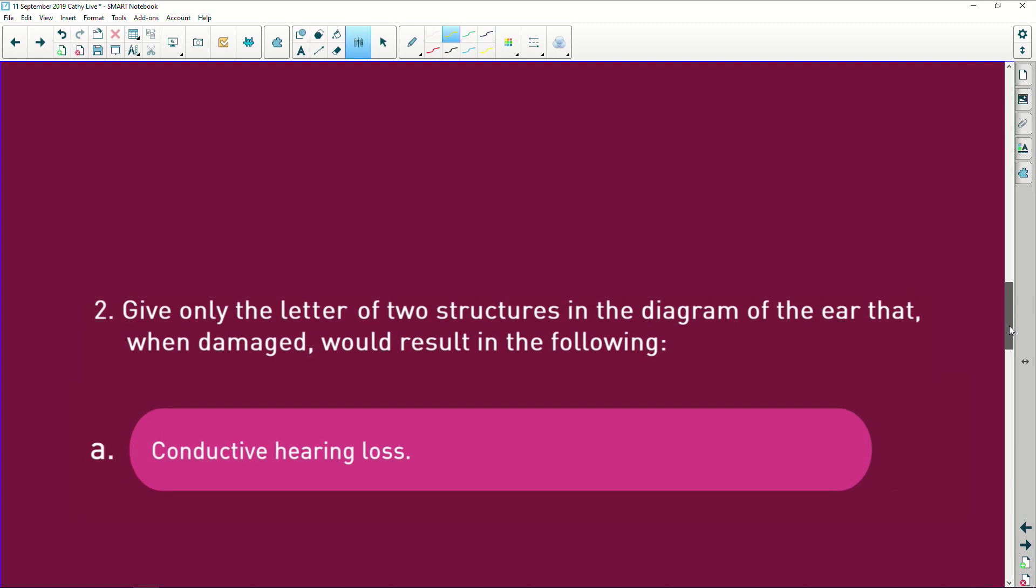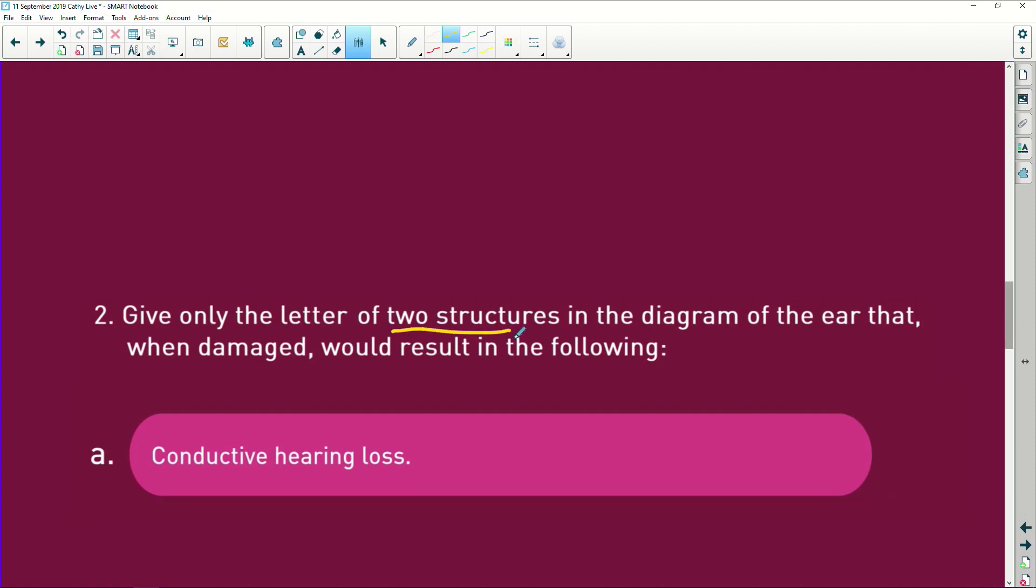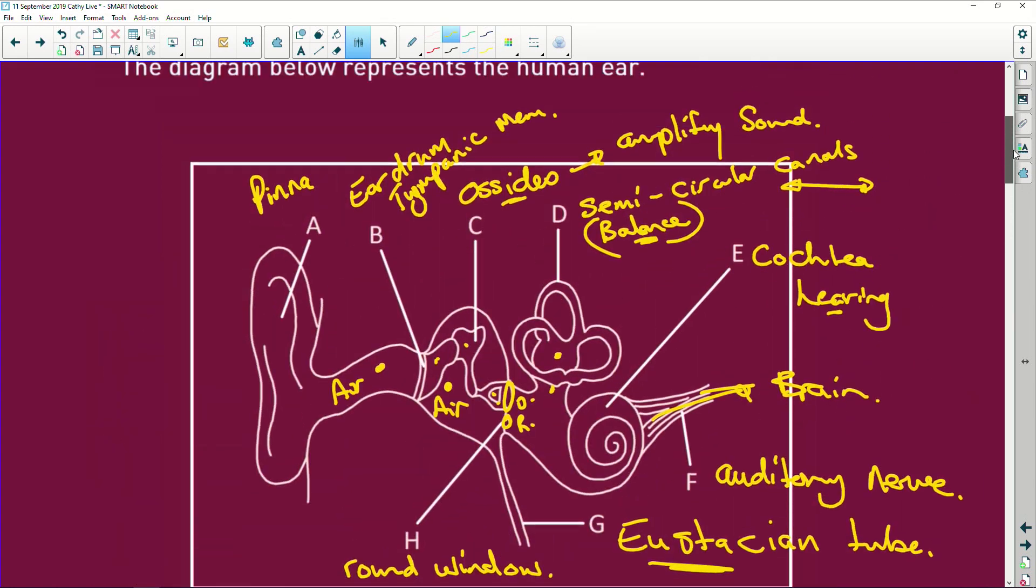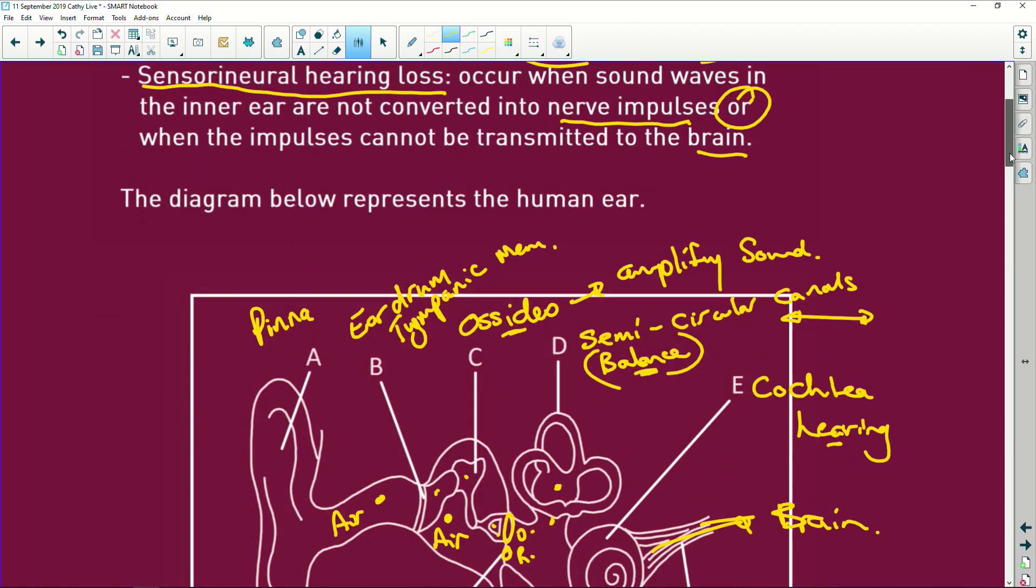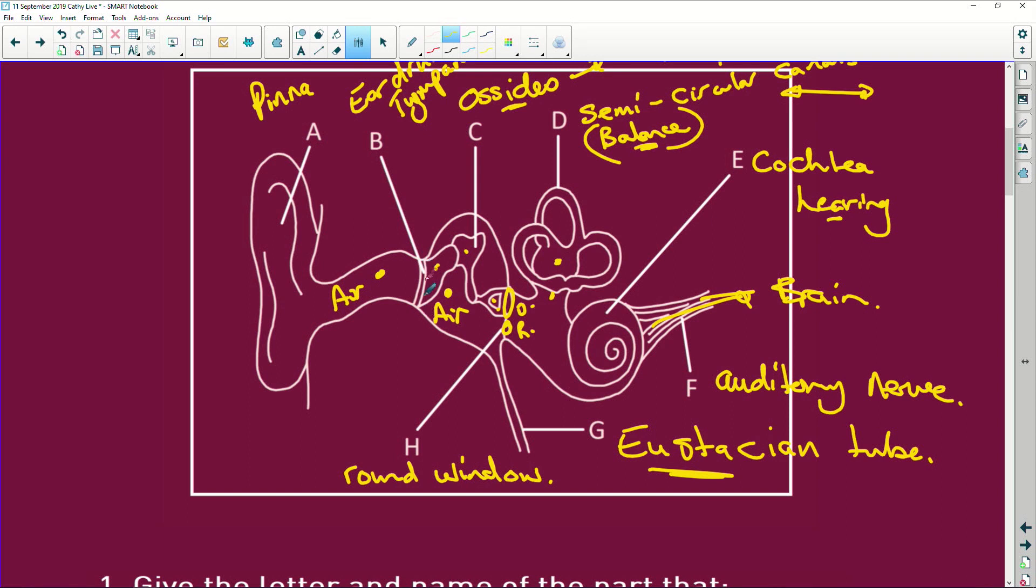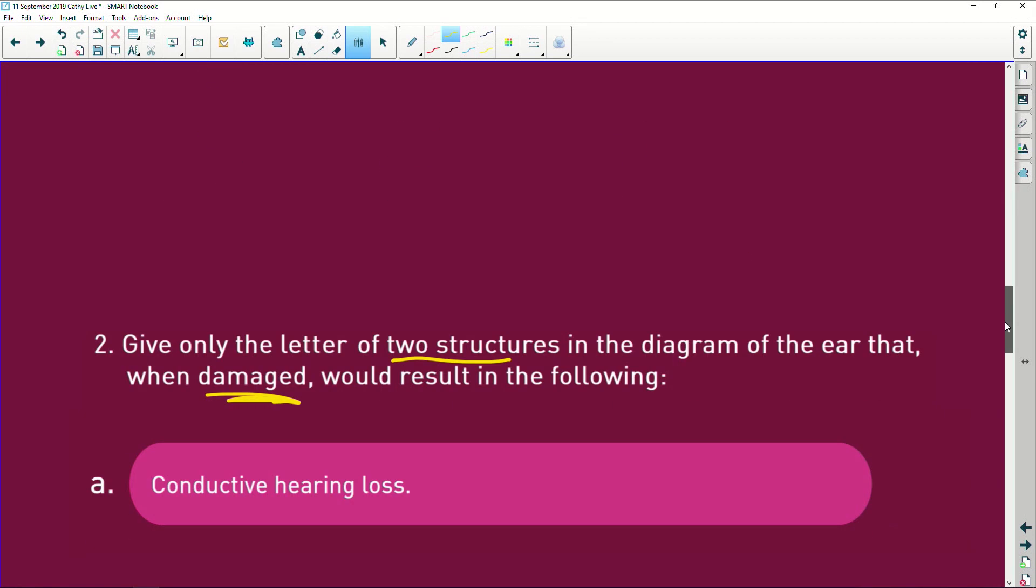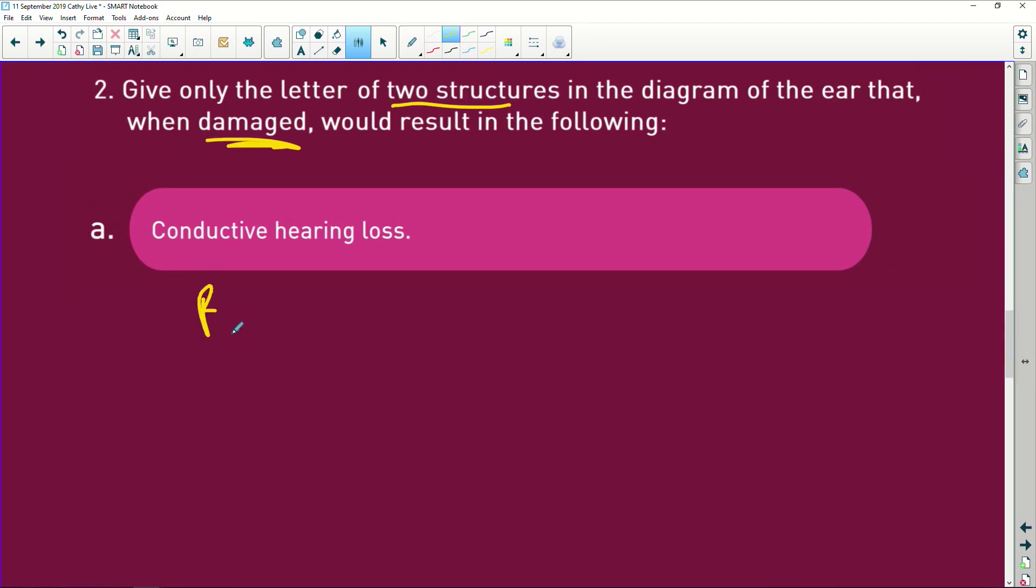All right. Give only the letters, the letter of two structures in the diagram of the ear that when damaged would result in the following. Conductive hearing loss. Well, they told you what conductive hearing loss was. Okay. They say here, it is when the sound vibrations cannot be conducted to the outer and middle ear. So, let's look. What's going to conduct that sound wave? It is going to be this eardrum or tympanic membrane and our ossicles. So, it's B and C.